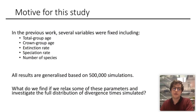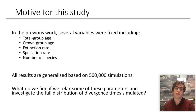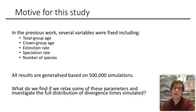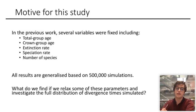We had a look at this paper and noticed that for most of their analyses, quite a number of variables were fixed, including total group age and crown group age. Further, all results were generalised based on 500,000 simulations. So we wanted to know what would happen if we relaxed some of these parameters and actually investigated the full distribution of divergence times.